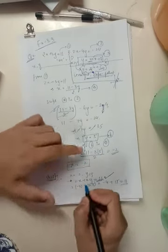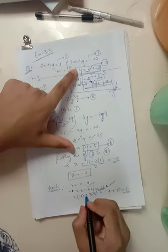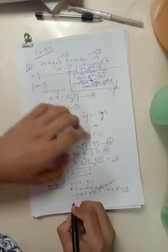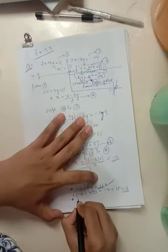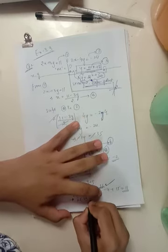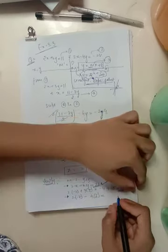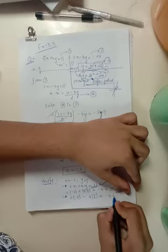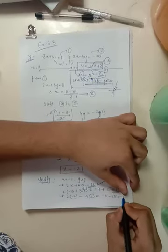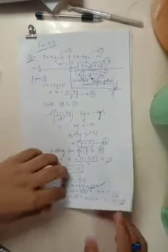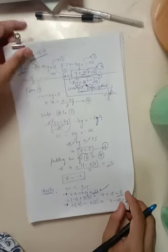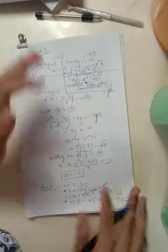So we see that it verifies the equation and to get even more short, put these values in the another equation also. That is twice of minus 2 minus 4 times 5. It gives us again minus 4 minus 20 and that is minus 24. So we see that both our equations are satisfied.